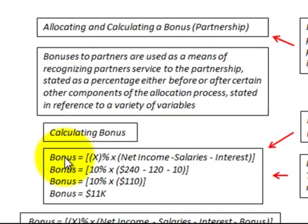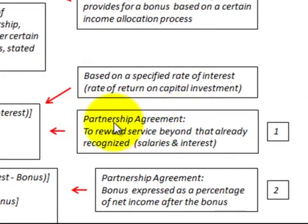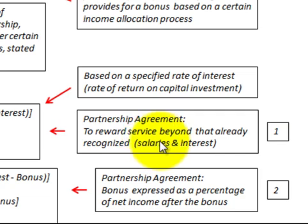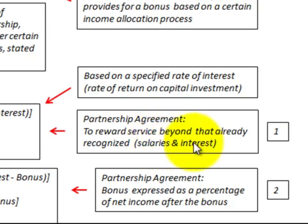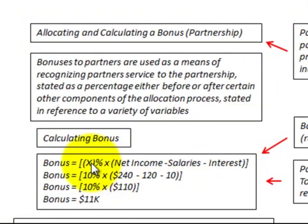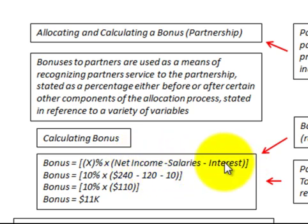Looking at our first case in the partnership agreement: to reward for services beyond what's already recognized through salaries and interest. The partner has already realized a salary and a return on his capital interest, and the partnership agreement provides for a bonus beyond those already recognized salaries and interest. The bonus is expressed as a percentage — specifically: bonus equals percentage times net income minus salaries already received, minus the interest.